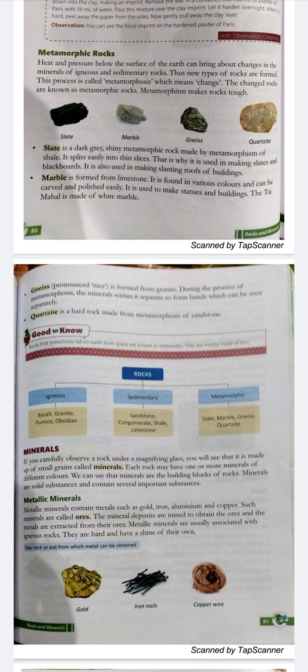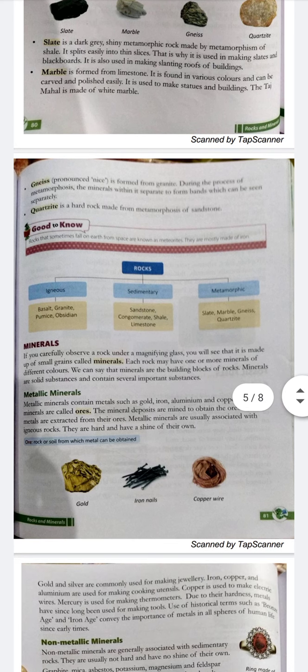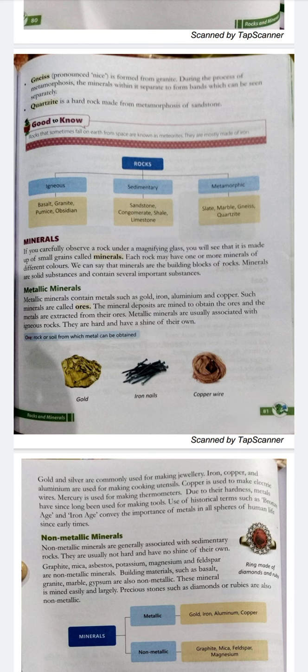If you carefully observe a rock under a magnifying glass, you will see that it is made up of small grains called minerals. Each rock may have one or more minerals of different colors. We can say that minerals are the building blocks of rocks. Minerals are solid substances and contain several important substances.